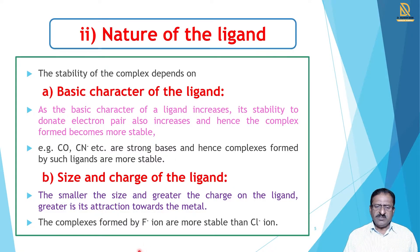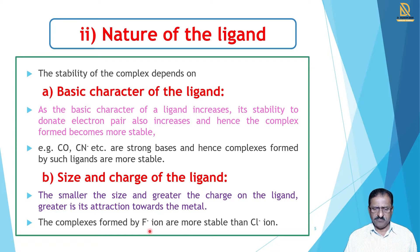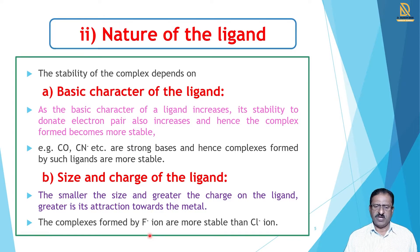The second property affecting ligand stability is the size and charge of the ligand. When there is small size and greater charge on the ligand, such ligands attract towards the metal more effectively and form stronger complexes. For example, comparing fluorine and chlorine: fluorine forms more stable complexes than chlorine, because the size of fluorine is small and the charge on fluorine is more than chlorine. Therefore, fluorine-containing complexes are more stable than chlorine-containing complexes.